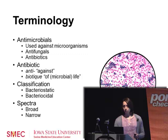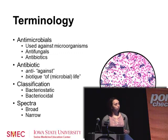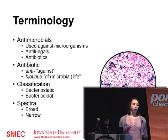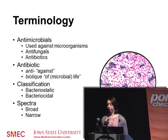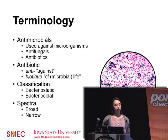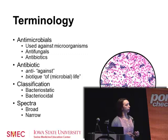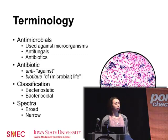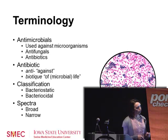Antibiotics are further classified by spectra. Broad-spectrum antibiotics work against a wide range of bacteria, acting on both gram-positive and gram-negative bacteria. A narrow-spectrum antibiotic is useful against a particular species or specific class. The difference between gram-positive and gram-negative is the structure of their cell wall — gram-positive bacteria have a much thicker cell wall, taking up more dark purple stain, while gram-negative bacteria have a thinner cell wall and take up only a light pink stain.